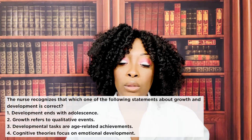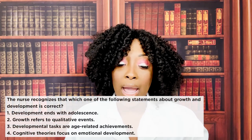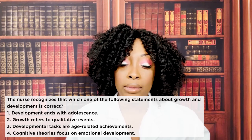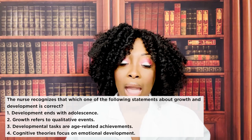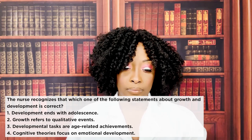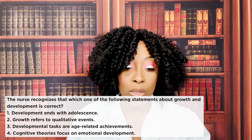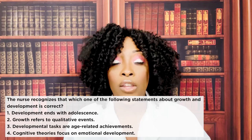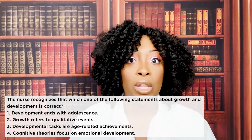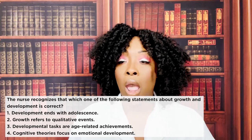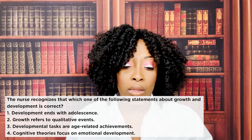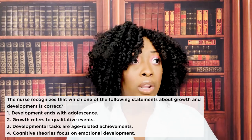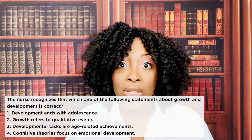The nurse recognizes that which of the following statements about growth and development is correct? One, development ends with adolescence; two, growth refers to qualitative events; three, developmental tasks are age-related achievements; or four, cognitive theories focus on emotional development. The correct answer is three — developmental tasks are age-related. At two years old, there are certain milestones we expect, versus ten, fifteen years old, or a middle adult. Choice one is false — development ends with death; we are continually learning and changing.